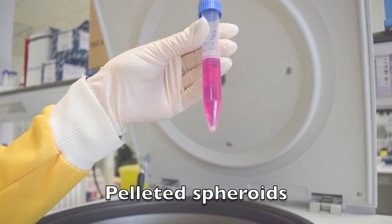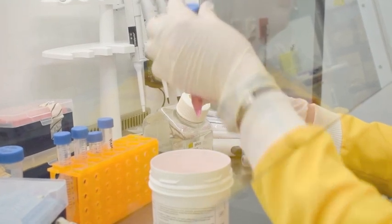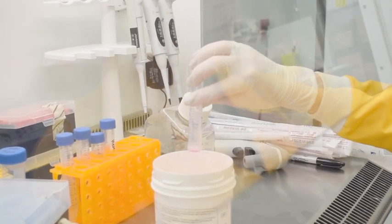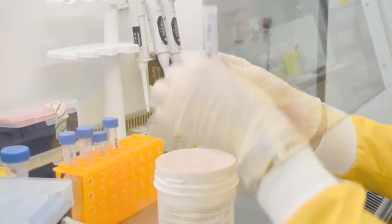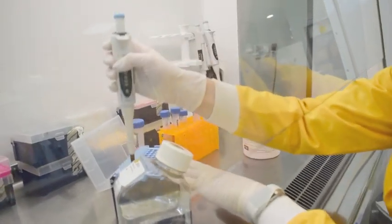Following centrifugation, a pellet of spheroids should be visible. The supernatant is then discarded. The pellet of spheroids is then resuspended in PBS.